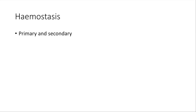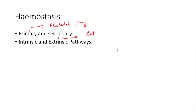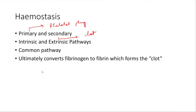Hemostasis can be primary or secondary. The primary part is basically the formation of a platelet plug, which happens first, and this platelet plug helps in the formation of the actual clot — a process known as secondary hemostasis. The formation of this clot has two components: the intrinsic and extrinsic pathways, both of which lead to a common pathway that ultimately results in the formation of a fibrin clot.